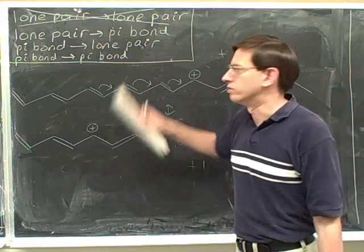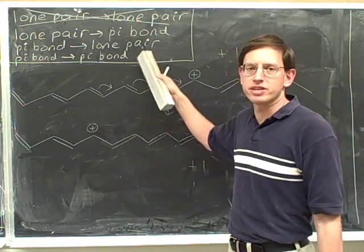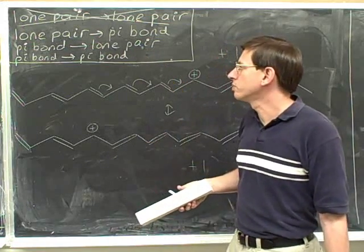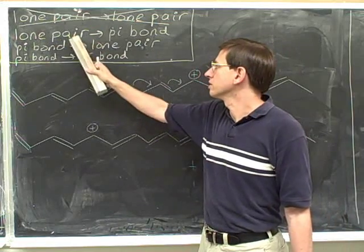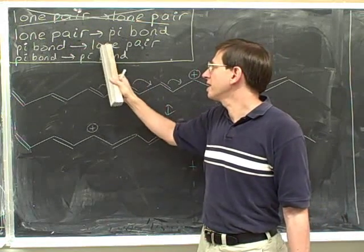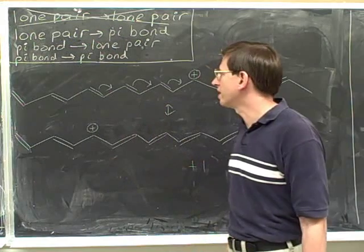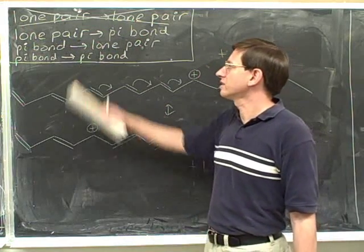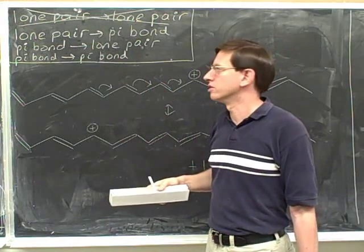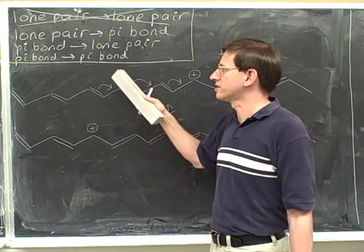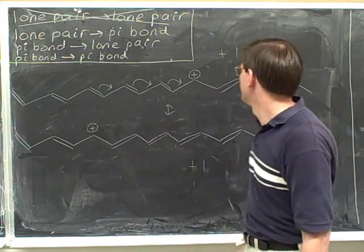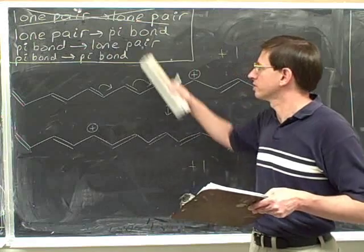I think I'm going to erase this now to give myself some more room on the board, but please make sure you have this in your notes. Remember that there's only three types of transitions: lone pair to pi bond, pi bond to lone pair, and pi bond to pi bond. And you're not allowed to go from one lone pair to another lone pair. So I hope you'll actually put this in your notes and have it prominently in front of you, but my space is limited here on the board, so I'm going to erase this.